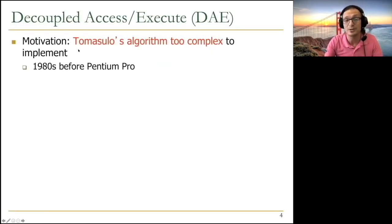Motivation was Tomasulo's algorithm is too complex to implement. This was 1980s before Pentium Pro. Nobody implemented it. People suggested we don't want this much complexity in the systems. VLIW can be positioned in a similar way also, because VLIW clearly has a very different philosophy than out-of-order execution and Tomasulo's algorithm.